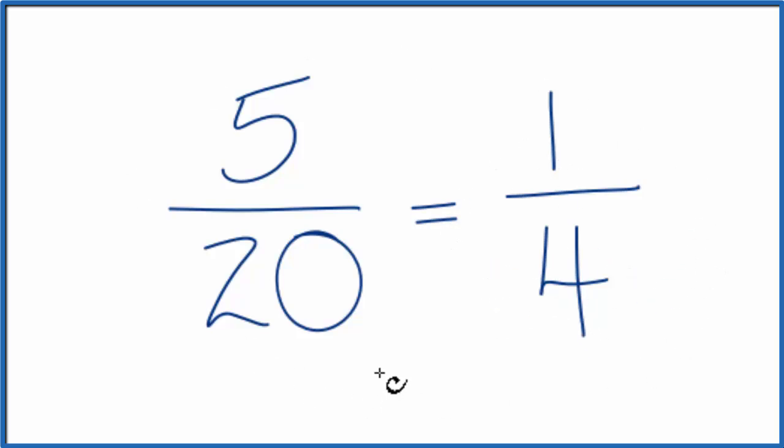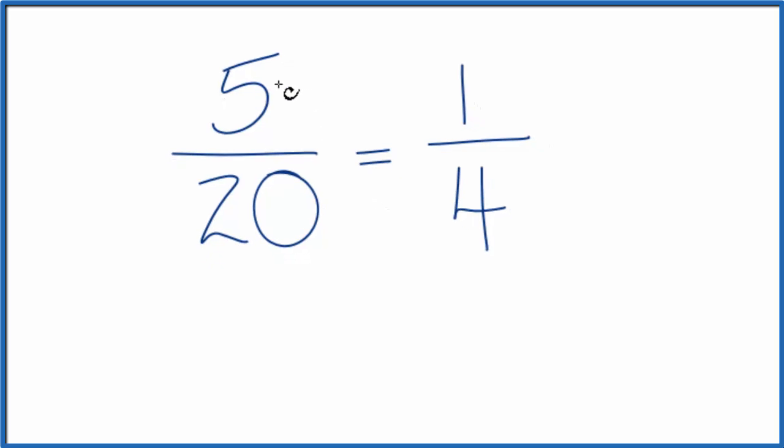These are equivalent fractions. They have the same value. If you divide 5 by 20, you're going to get 0.25. If you divide 1 by 4, you get 0.25. So they have the same value, it's just that we've reduced or simplified 5 over 20 down to 1 over 4.